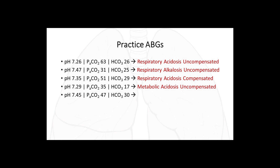Example five: pH 7.45 — normal. PaCO2 47 — slightly elevated (acidotic). Bicarb 30 — slightly elevated (alkalotic). Both are increased, so look at the pH — it is on the alkalotic side at 7.45. The elevated bicarb is what matches the alkalotic pH, not the CO2. The elevated CO2 is compensating. The answer is compensated metabolic alkalosis.